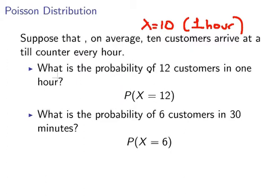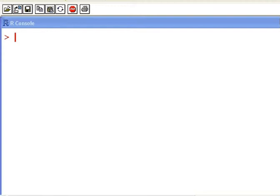What is the probability of 12 customers in a one hour period? Well we'll look at that first one there first and what I'm going to do is go to R now and to evaluate that we use the dpois command.